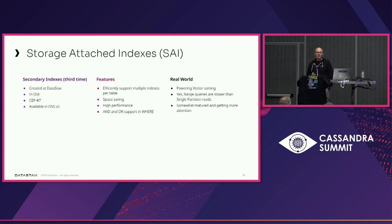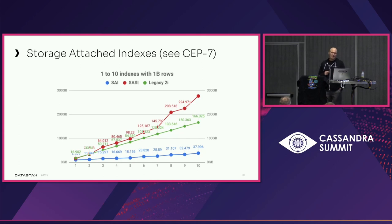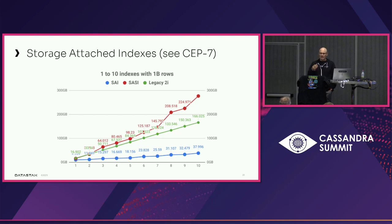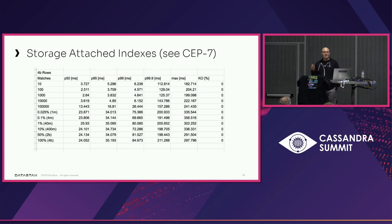We're going to see a list of things that make SAI better that we've uncovered in this project. From CEP-7, SAI was one of the first things to go in. Looking at the chart, you can see the blue line at the bottom — as you add more SAI indexes, you're not using a linear amount of additional disk space. It is very efficient at indexing multiple columns on a table, and that's really important given the schema I'm about to show you.